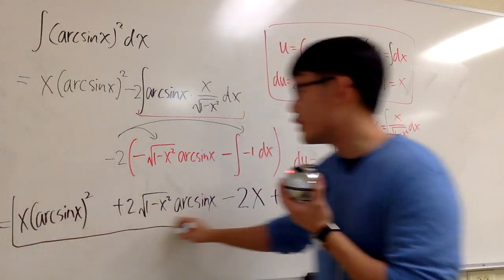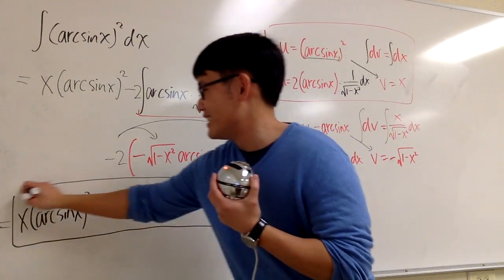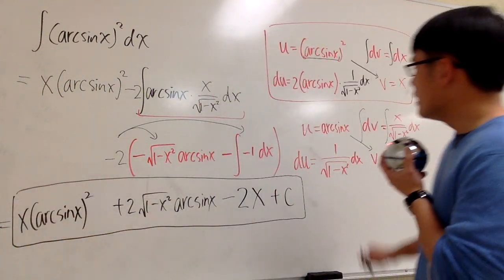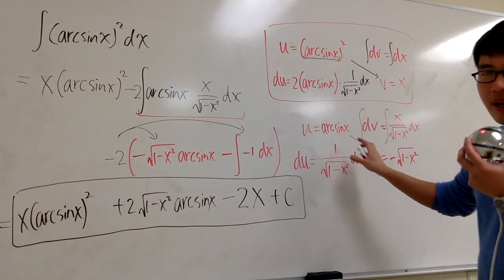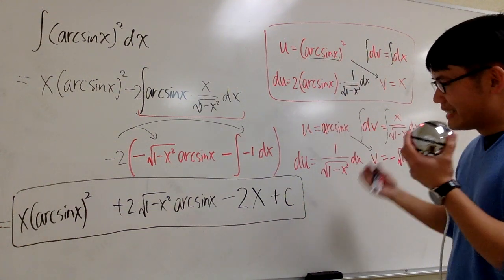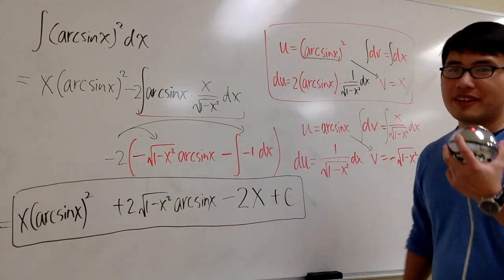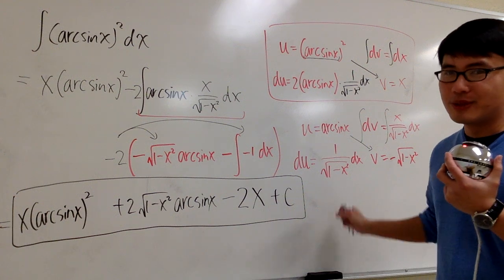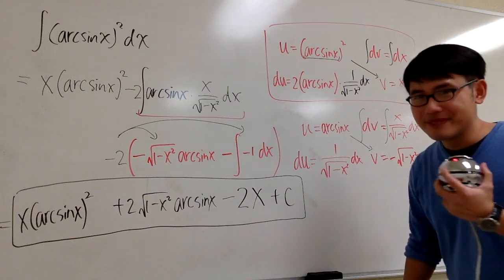Integration by parts, twice. Notice that the choice of u is about the same, but the DI method wouldn't work out that nicely, so do it like this. That's it.